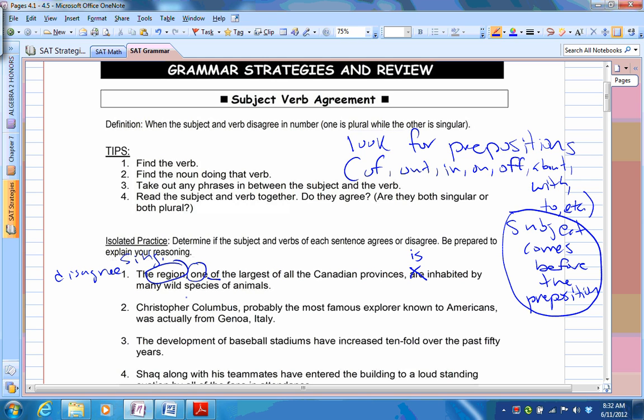Let's look at another one. Christopher Columbus, probably the most famous explorer known to Americans, was actually from Genoa, Italy. So again, we do mention to take out any phrases in between. So this is just a description about Christopher Columbus. What we really care about is the subject and the verb, and here they're okay because Christopher Columbus is singular and was is also singular. So here we have an agreement. So this is all good.